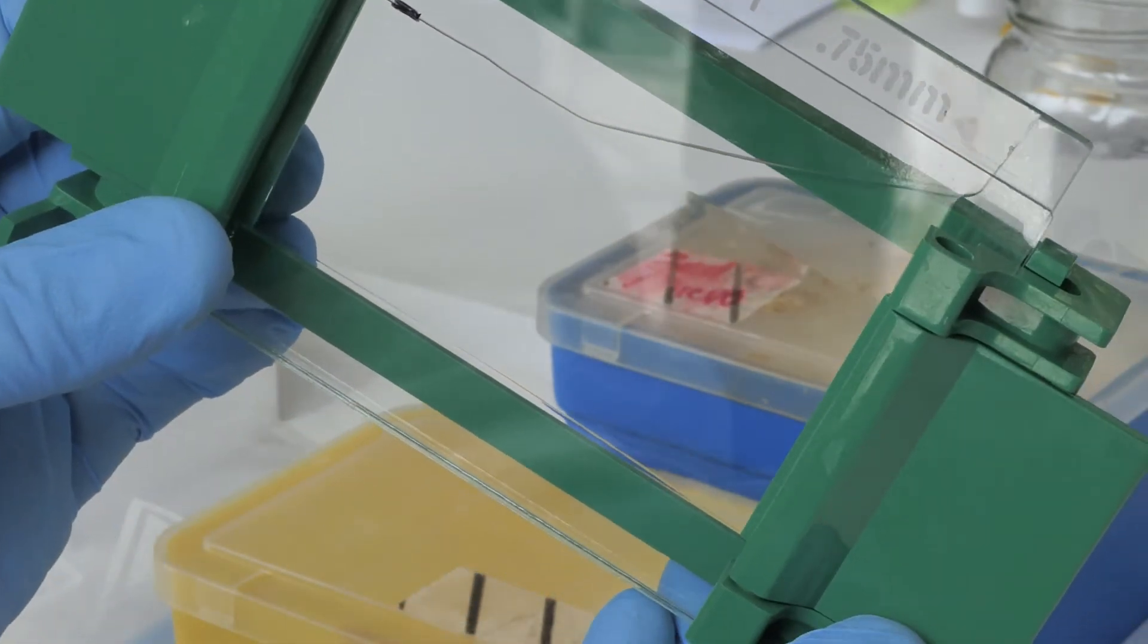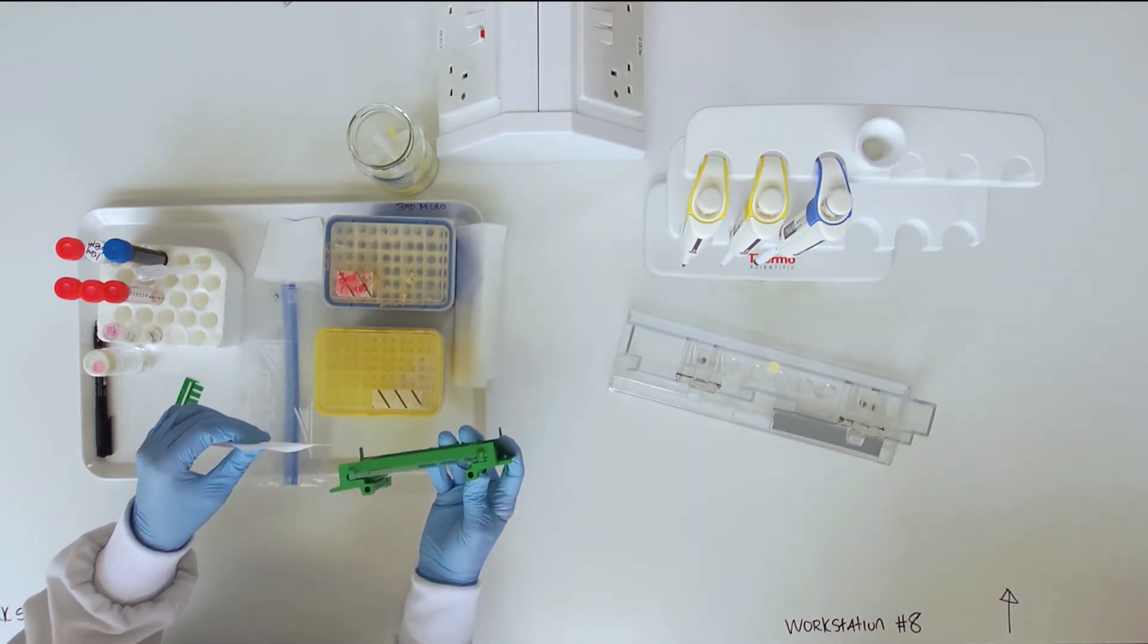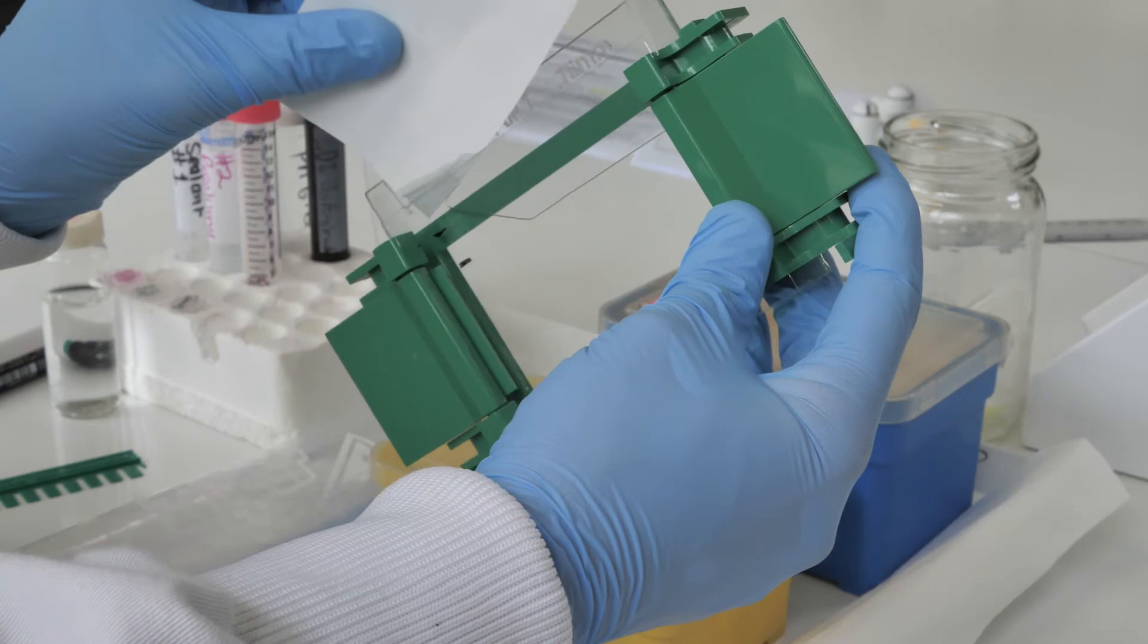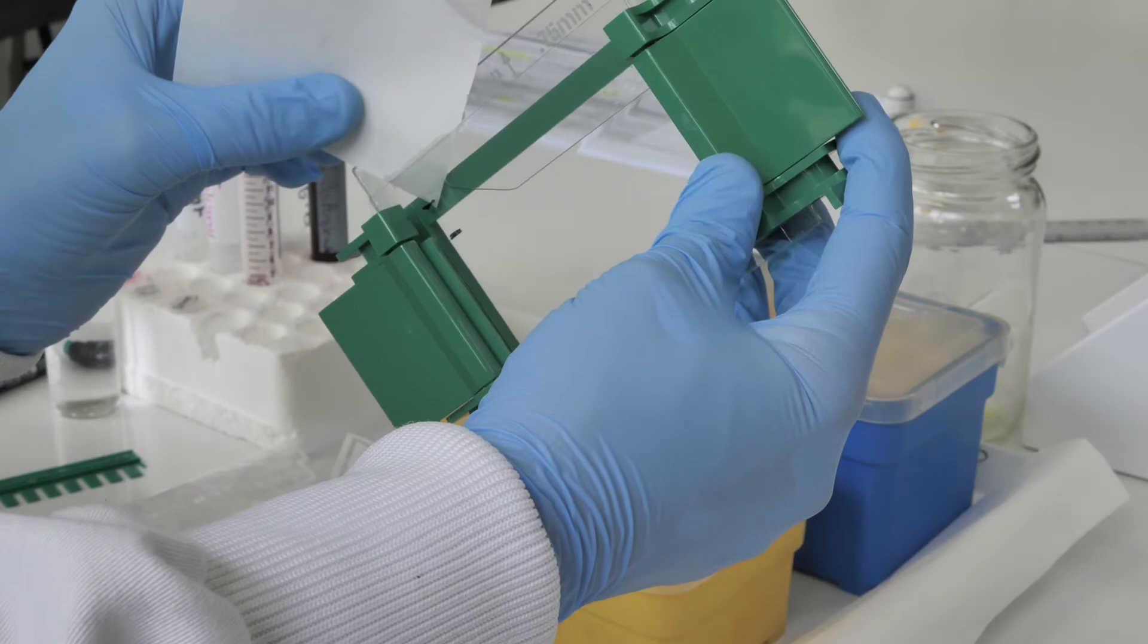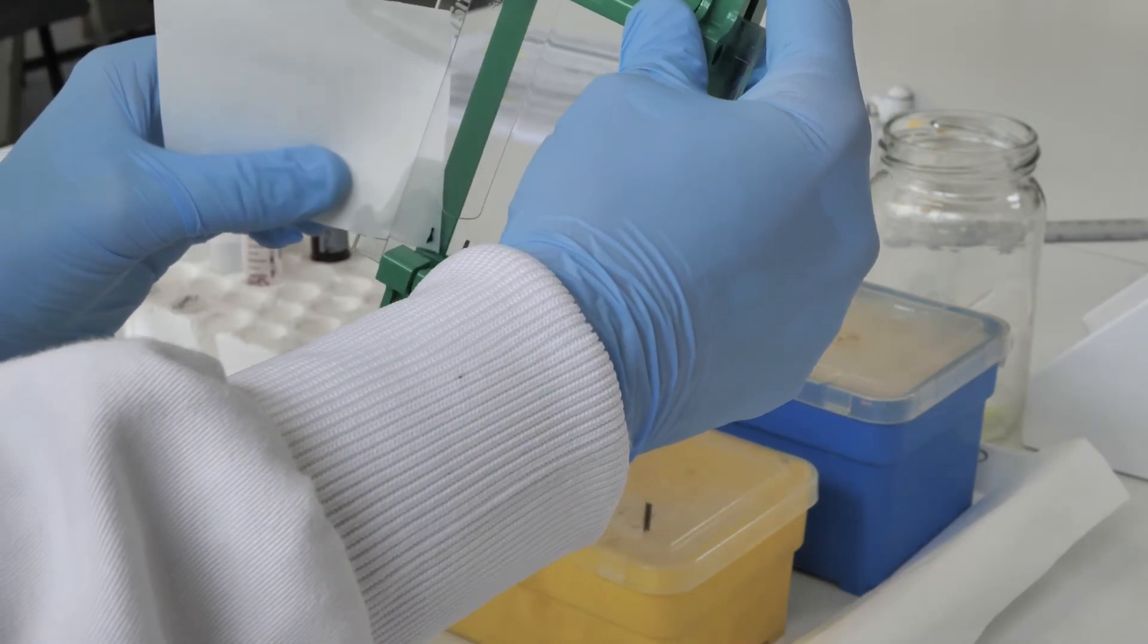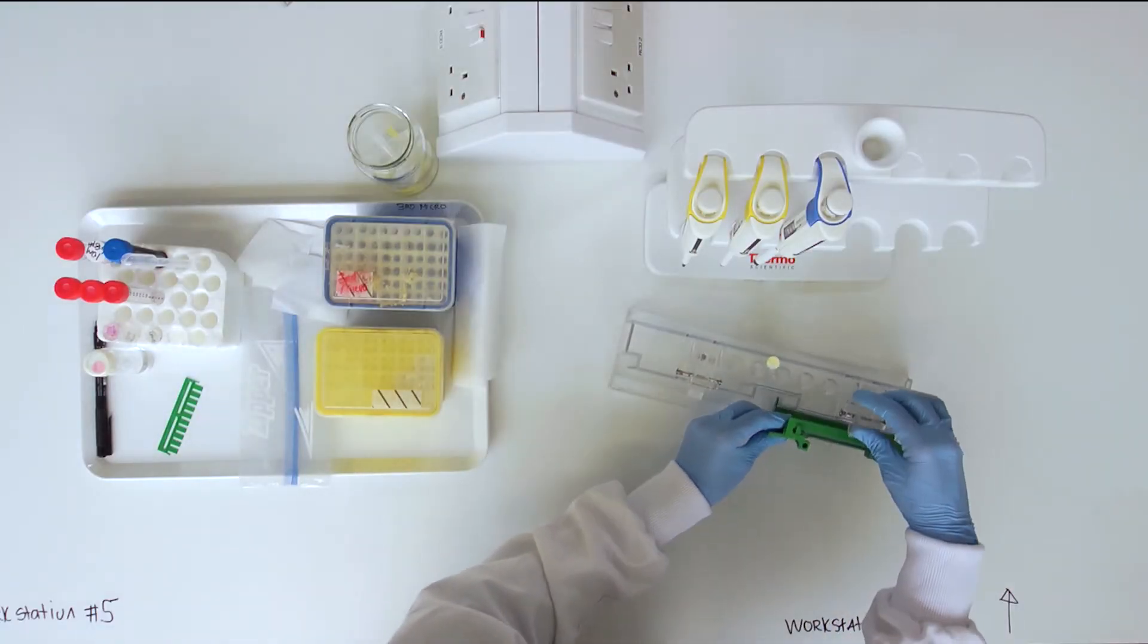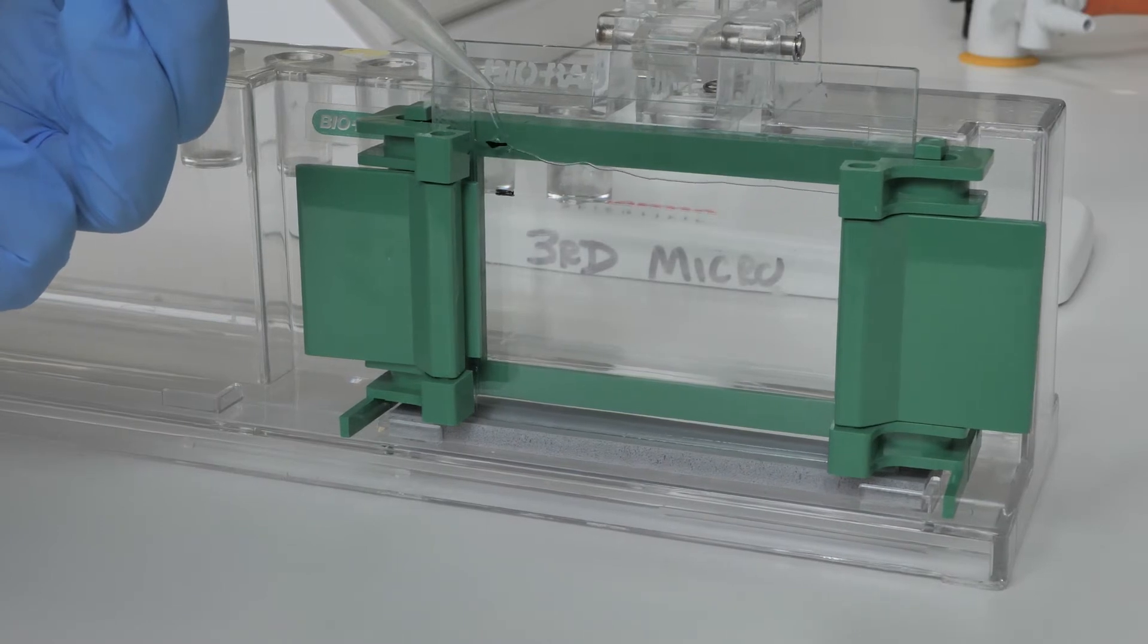When the resolving gel has polymerized, pour out the overlaid water. You can use filter paper to remove the last of it. Pipette the gel solution into the glass sandwich until it reaches the top of the plates.